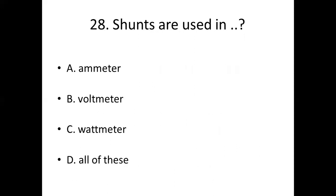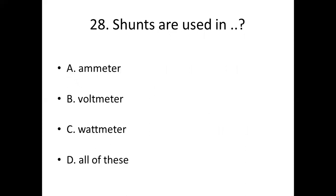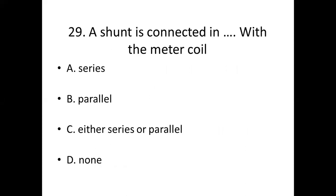28th bit: Shunts are used in dash. Option A: Ammeter. Option B: Voltmeter. Option C: Wattmeter. Option D: All of this. Answer — Option A: Ammeter. 29th bit: Shunt is connected in dash with the meter coil. Option A: Series. Option B: Parallel.